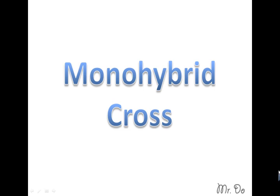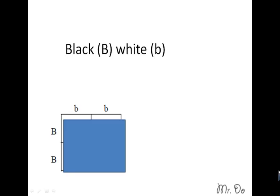Mono-hybrid cross. So let's say for example we have big B to be black and small b to be white. What would you get if you crossed a homozygous dominant black with a homozygous recessive?